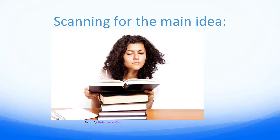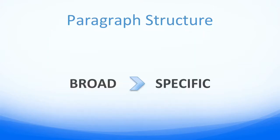So how do we structure our paragraphs according to US academic standards? We structure paragraphs to follow a general to specific structure, or you might hear it referred to as a broad to specific structure. Each paragraph should begin broadly or generally with a statement of the main idea of the paragraph — broad enough so that it relates to all of the following information in the paragraph. However, this topic sentence shouldn't be too broad or too specific.